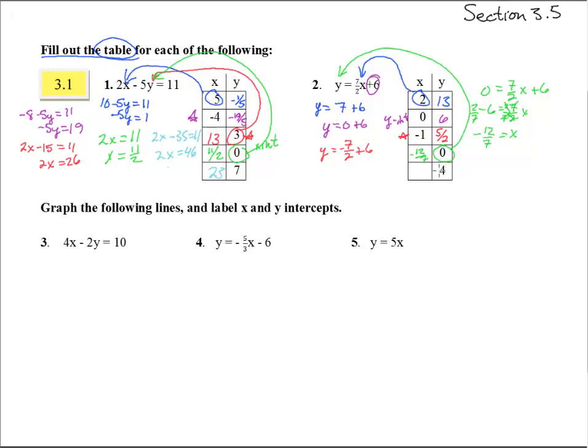And then the final one, sticking 4 in for y, we put a 4 there, and we get 7/2 x plus 6. Divide both sides, sorry, subtract 6 off of both sides.